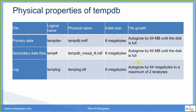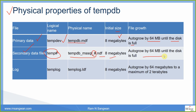The physical properties of tempdb are: primary data file — logical name tempdb, physical name tempdb.mdf, initial size 8 MB, file growth auto-grows by 64 MB until disk is full. Secondary database file — physical name tempdb hash .ndf, 8 MB, file growth 64 MB until disk is full. Log file — templog.ldf, 8 MB, auto-grows by 64 MB to a maximum of 2 terabytes.